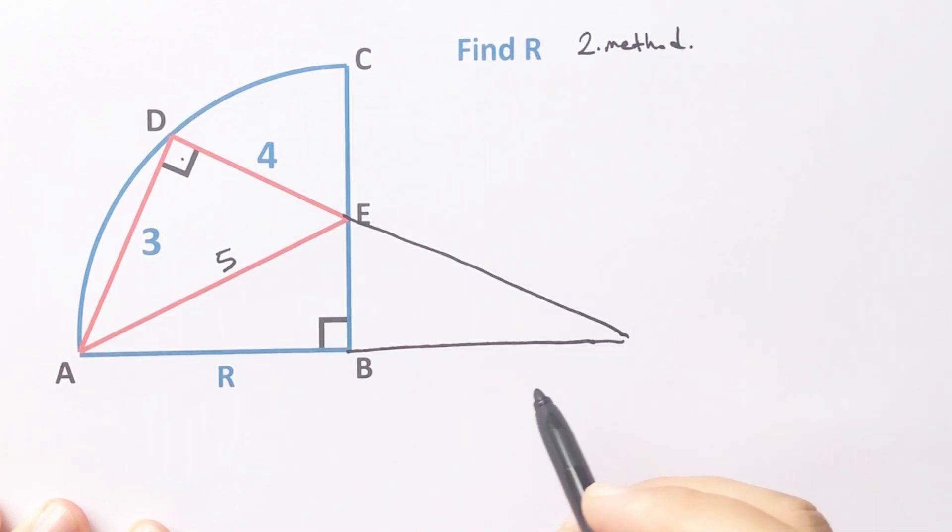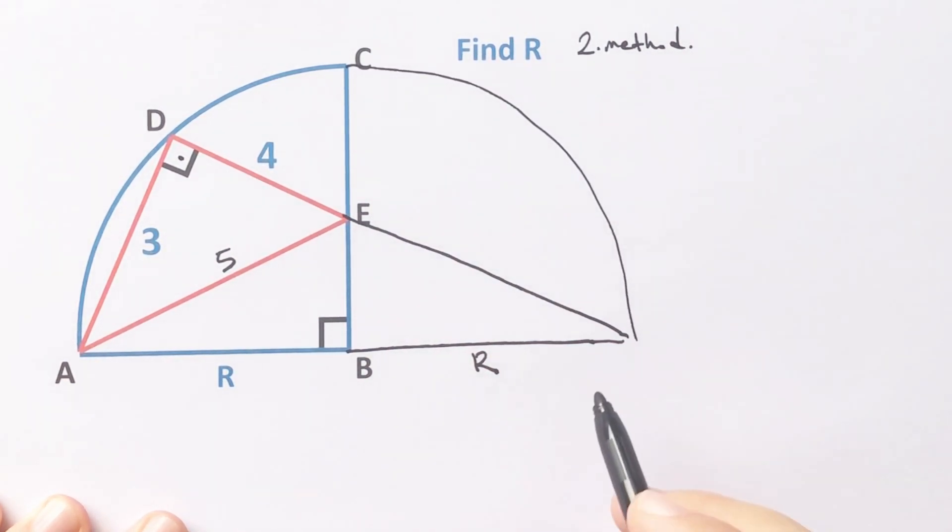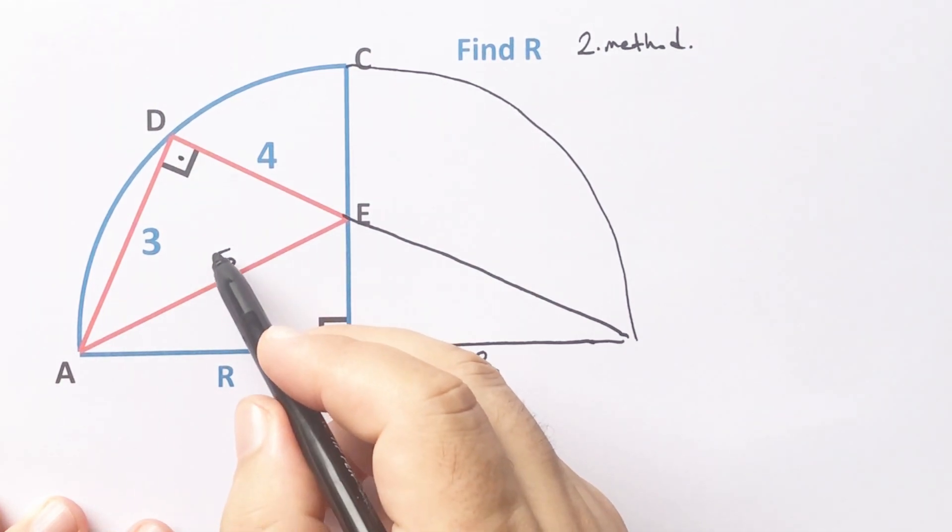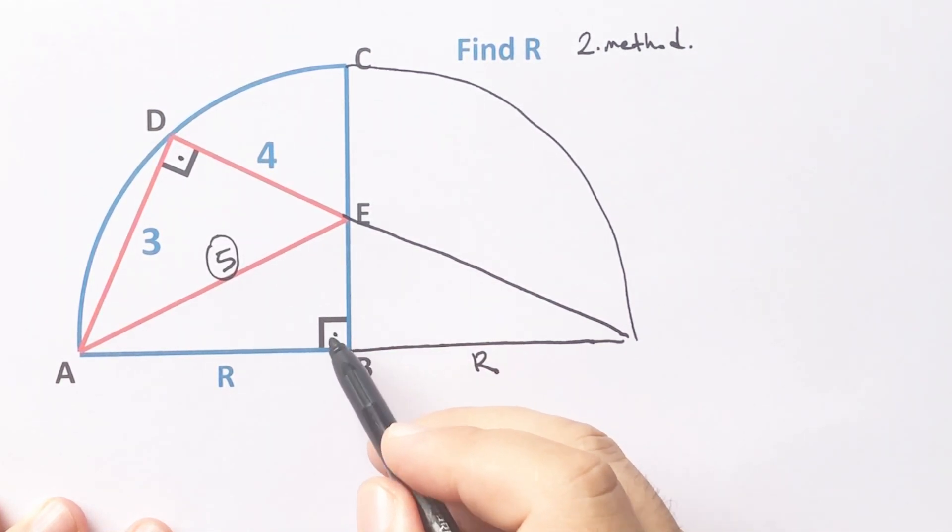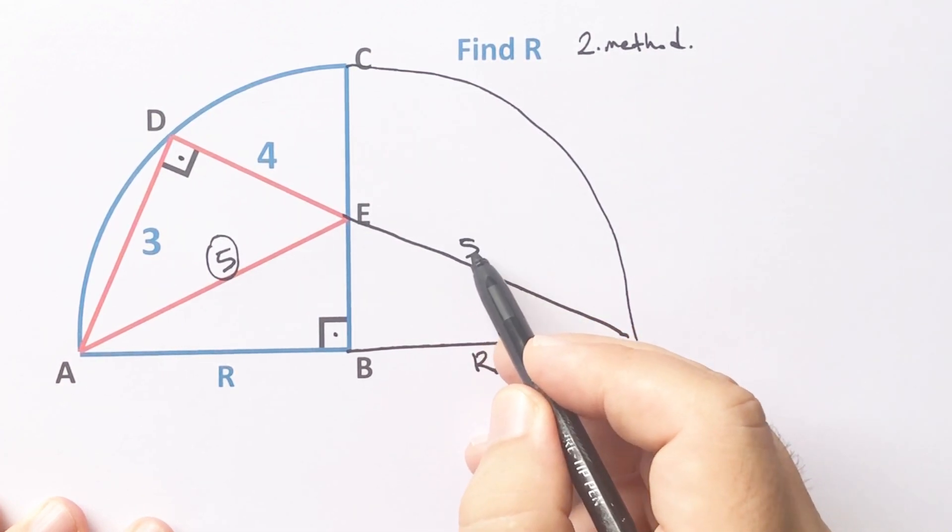That means if we extend here, we must get a semicircle. So this length is also radius, because this side is opposite of 90 degrees. Therefore, if we complete this line, we will have a semicircle. So if here is 5 units, notice that here must be 5 units.